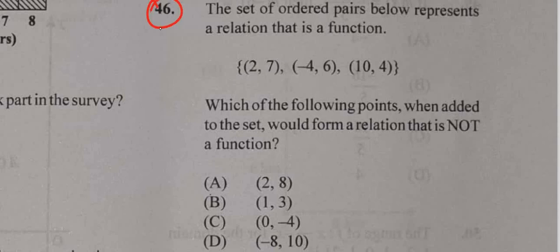Question 46. We have a set of ordered pairs below that represents a relation that is a function. And how do we know that? Because if we look at the first number in the bracket, those are our input values, and our input values should not repeat.